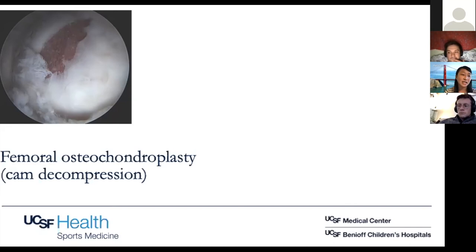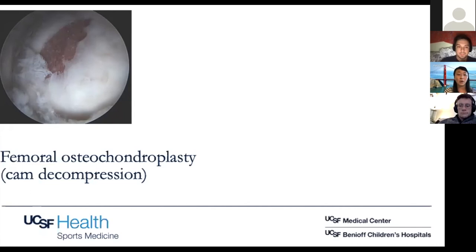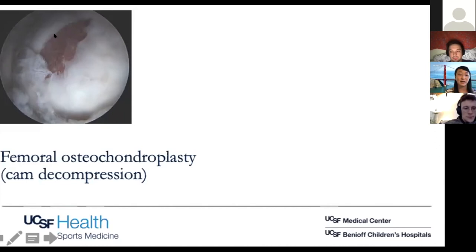This patient has a cam lesion. We start taking down some bone — and remember, we've already taken the traction off and flexed the hip up, so all the articular surface cartilage should be hiding away into the hip socket. You also use X-ray to guide your resection, taking a shot with your burr to make sure it's at the level where the alpha angle is starting. You can use a combination of burr and RF probe for femoroplasty. You want to go right up to the labral repair and recreate a nice offset there.